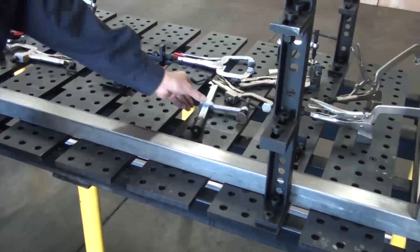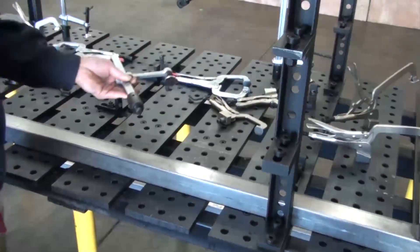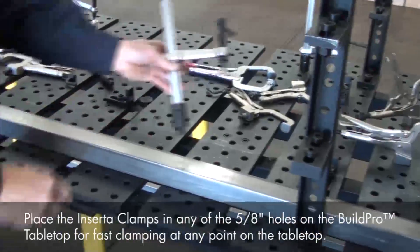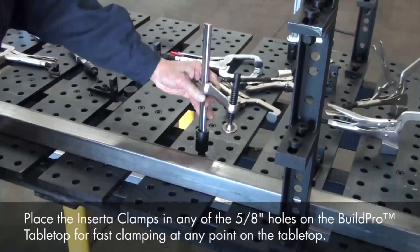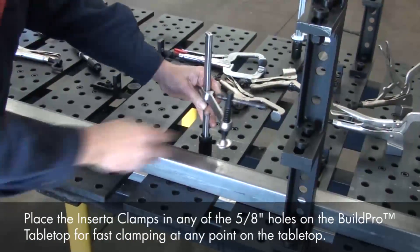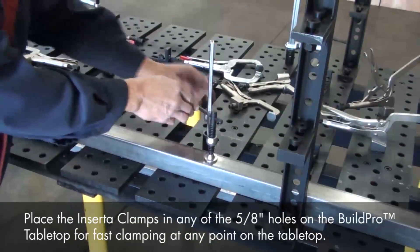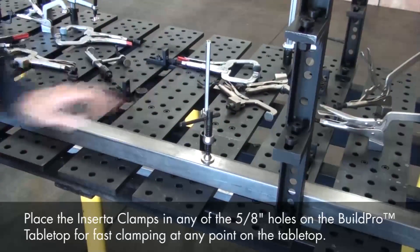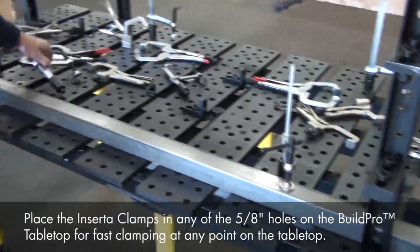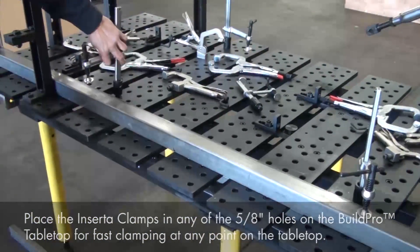Now that we've positioned our bottom tubing, we're going to clamp the tubes with Inserta Clamps. True to its name, you just insert the Inserta Clamps into the 5/8 holes on the tabletop, slide the clamp arm down, and tighten. The Inserta Clamps are an indispensable tool that works very well with the BuildPro table.